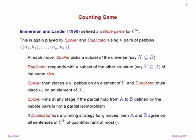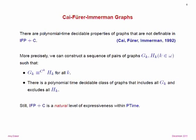I'll use Hella's bijection game for the proof sketch. The Cai-Fürer-Immermann result shows there are polynomial-time properties of graphs not definable in fixed-point with counting. The property they came up with is not obvious and not easy to describe. It used to be said that any natural polynomial-time property you can think of is definable in fixed-point with counting—I'll show that's actually not true, though it took some effort to find an original example.